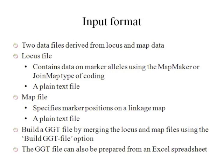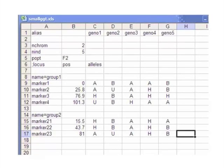Once you prepare the LOCUS and MAP files, you can build GDT input data by merging them in the GDT program. The GDT input file can also be prepared from an Excel spreadsheet. Here is the Excel spreadsheet for the GDT input data. In the second column, you can see the map information of the marker, and then your marker data are listed there.